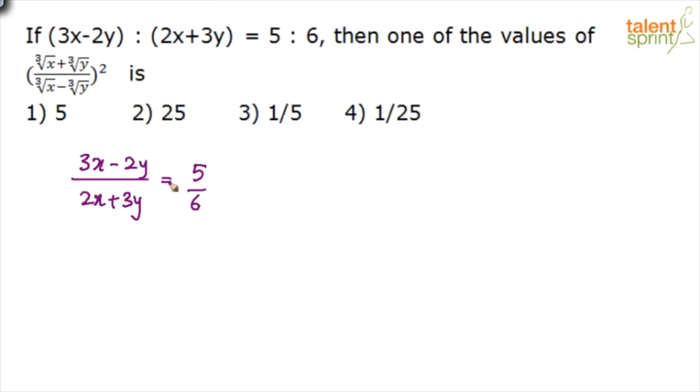What we can do here is cross multiply and find out the ratio between x and y. The ratio between two terms is given to us. Let us find out the ratio between the two variables. Cross multiply: 6 times 3 gives 18x minus 12y equals 10x plus 15y. Upon simplification, 18x minus 10x gives 8x equals 27y, or we can say x by y equals 27 by 8.